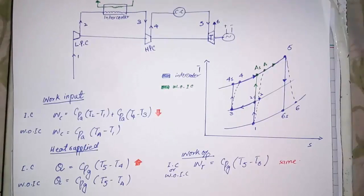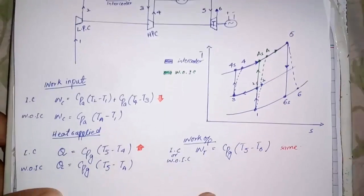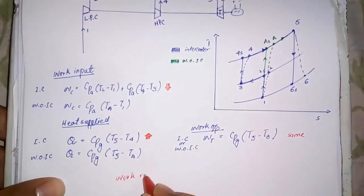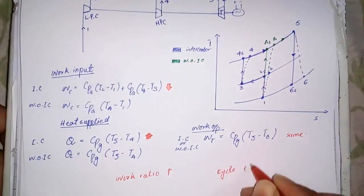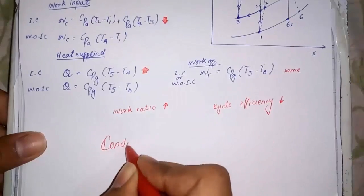So by using intercooler, work ratio is increased as it is the ratio of work output to the work input. And cycle efficiency is decreased as it is the ratio of net output to the heat supplied.